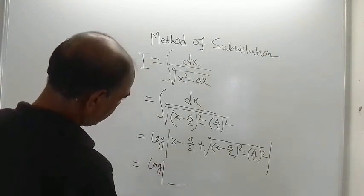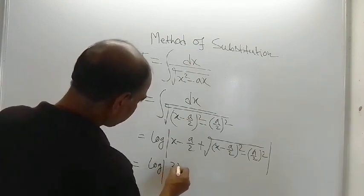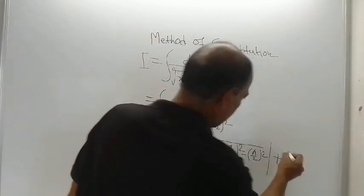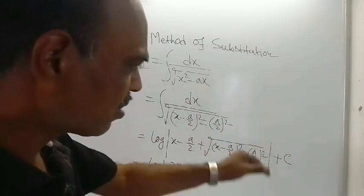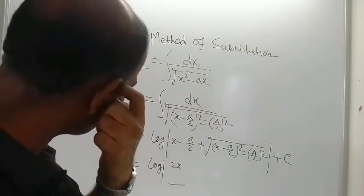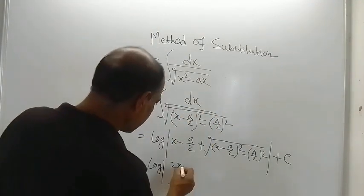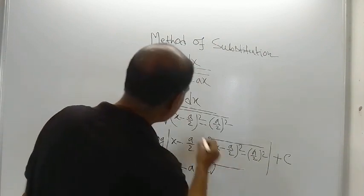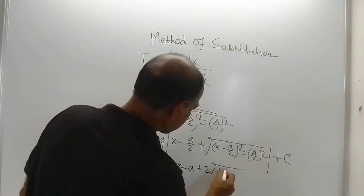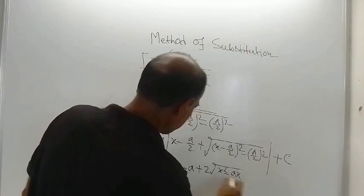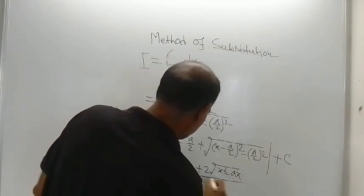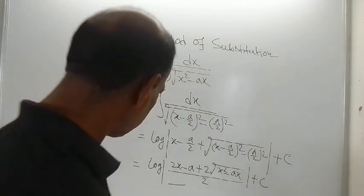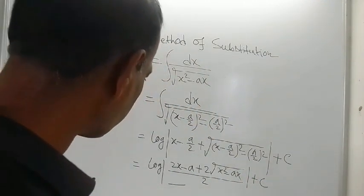2x, right? Oh sorry, a constant of integration should appear here plus c. I have written c is the constant of integration. So 2x minus a plus 2 into root of x square minus ax. And this total is divided by 2 plus c is again the same thing, the constant of integration.